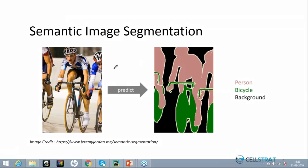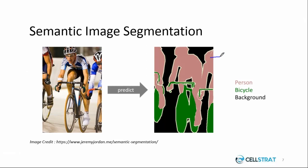Here you can see semantic image segmentation with three classes identified: purple indicates a person, green indicates a bicycle, and black indicates the background. We have chosen to identify three different classes, and pixels are marked as per those classes. This is what we call semantic image segmentation.